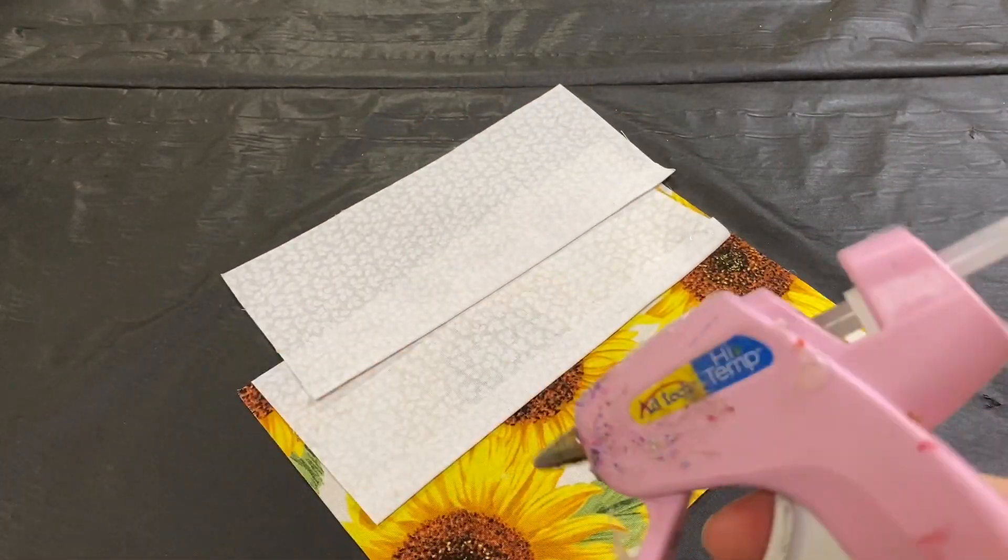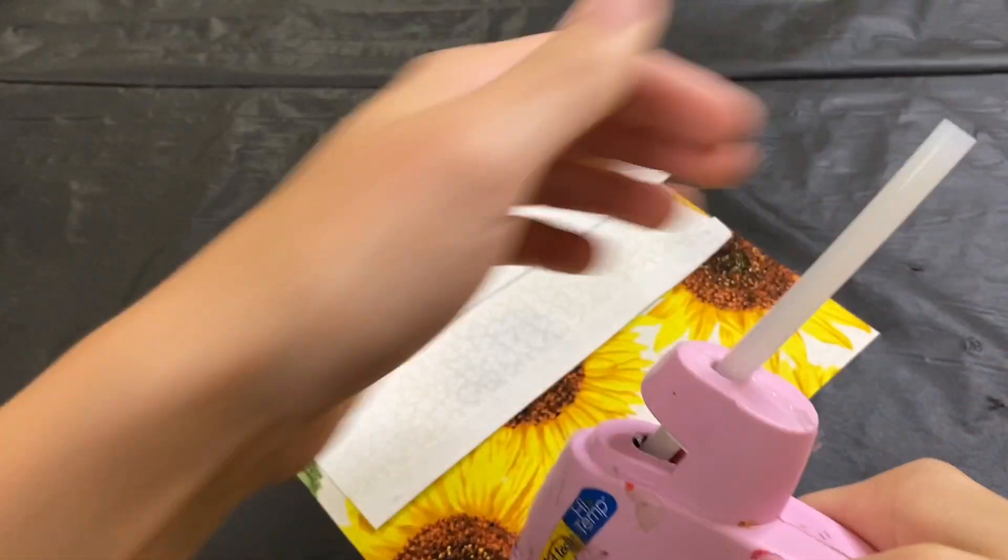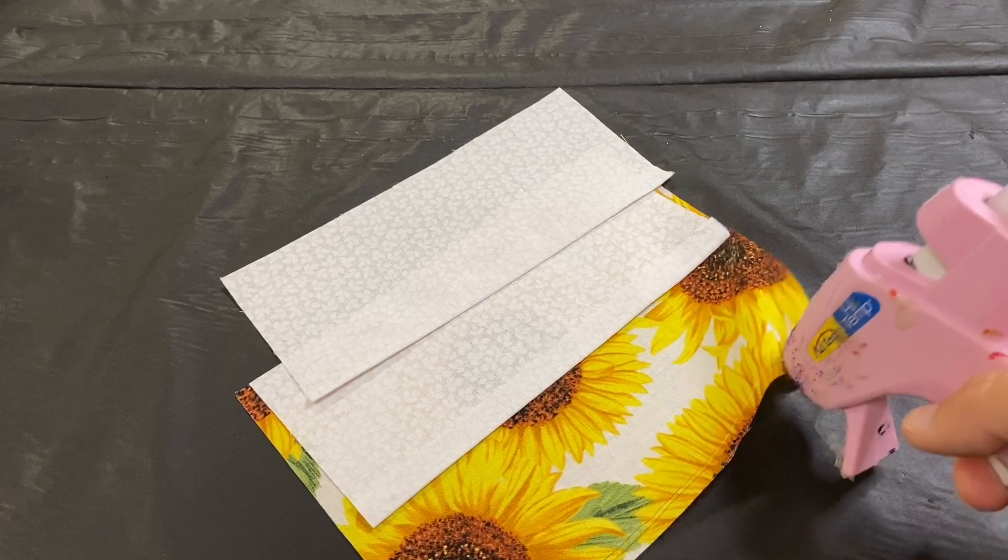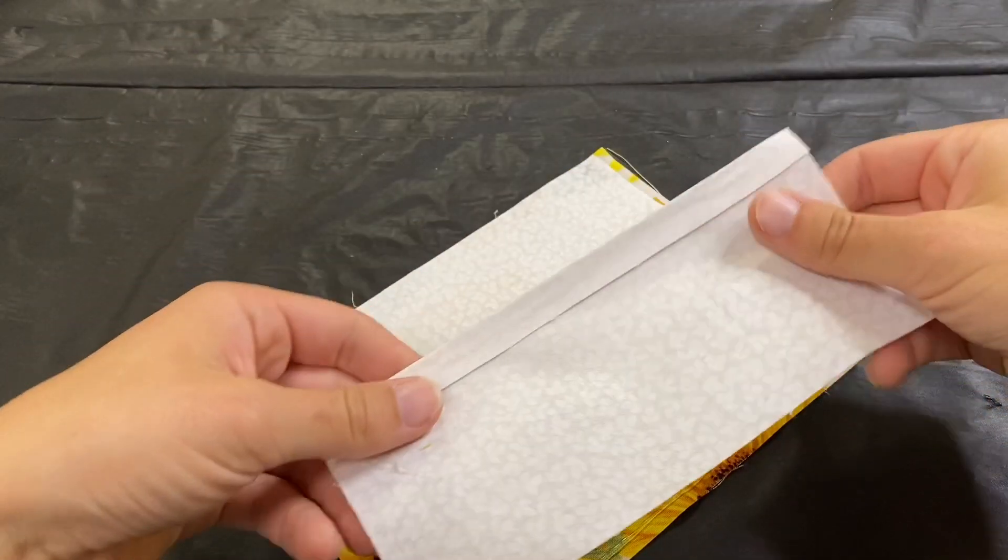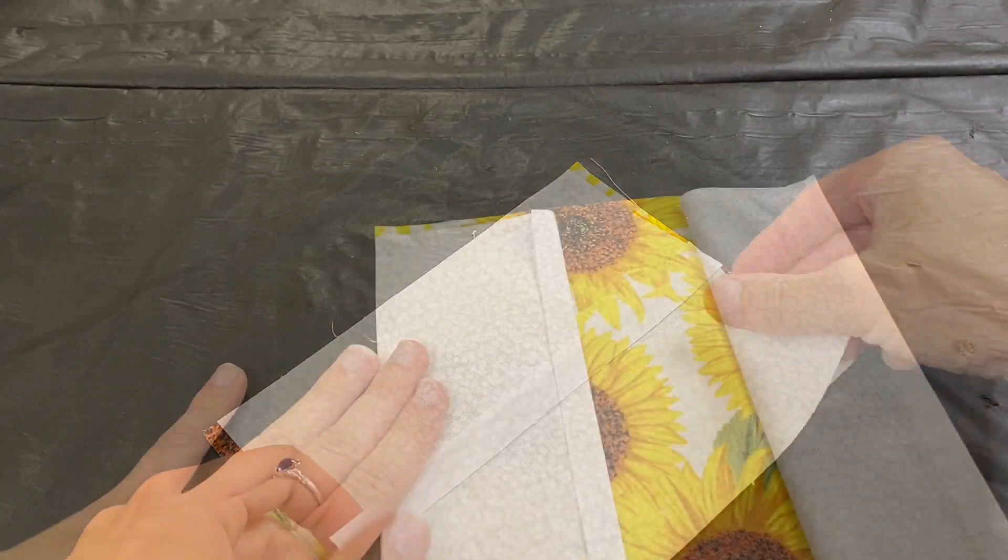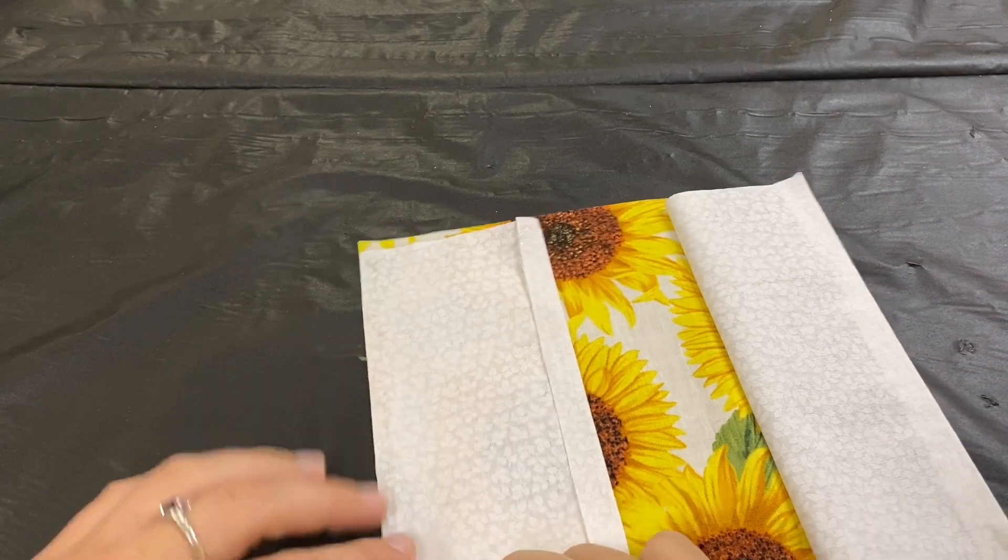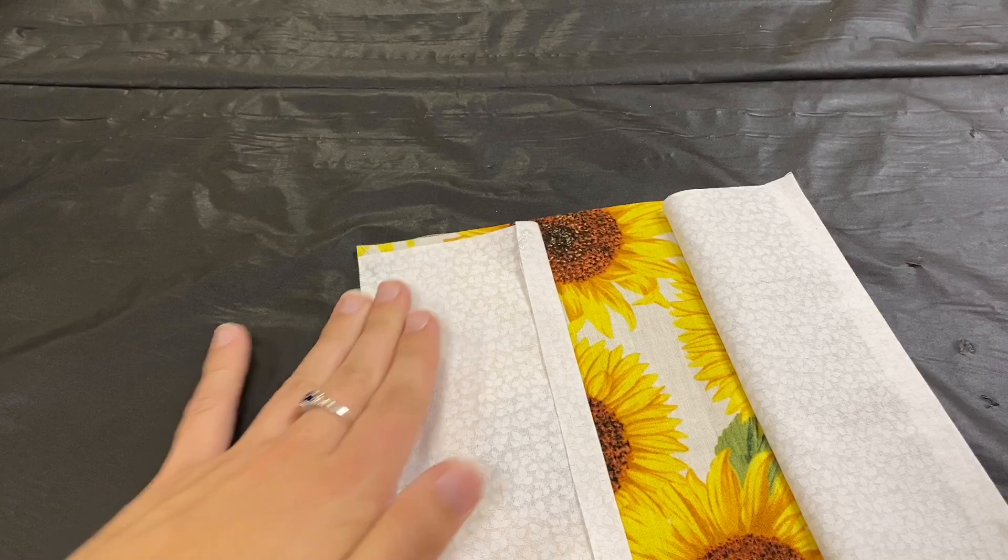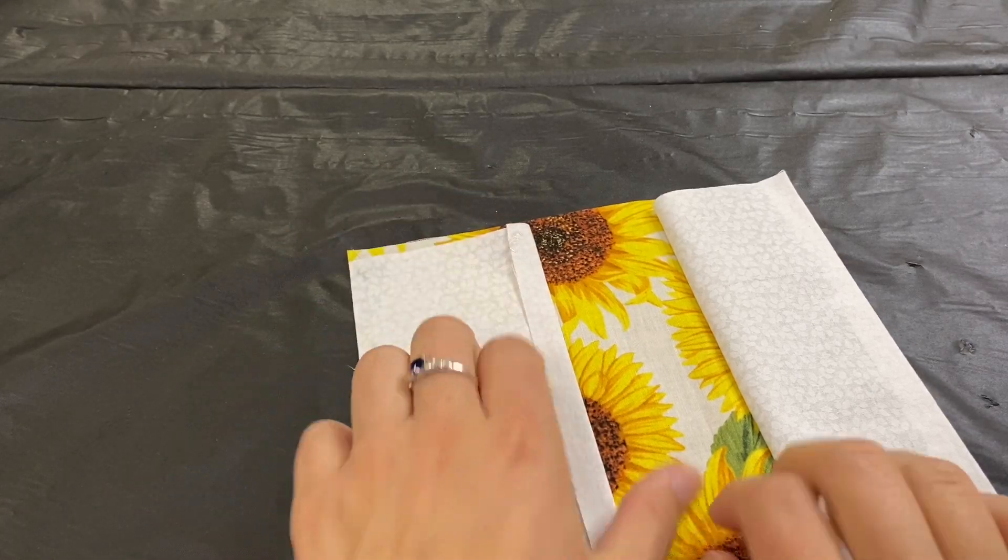Now I'm gluing the other side. Try to keep your line as straight as possible make sure you give your glue a little bit of time to dry between each step. When it no longer feels warm it's about dry.